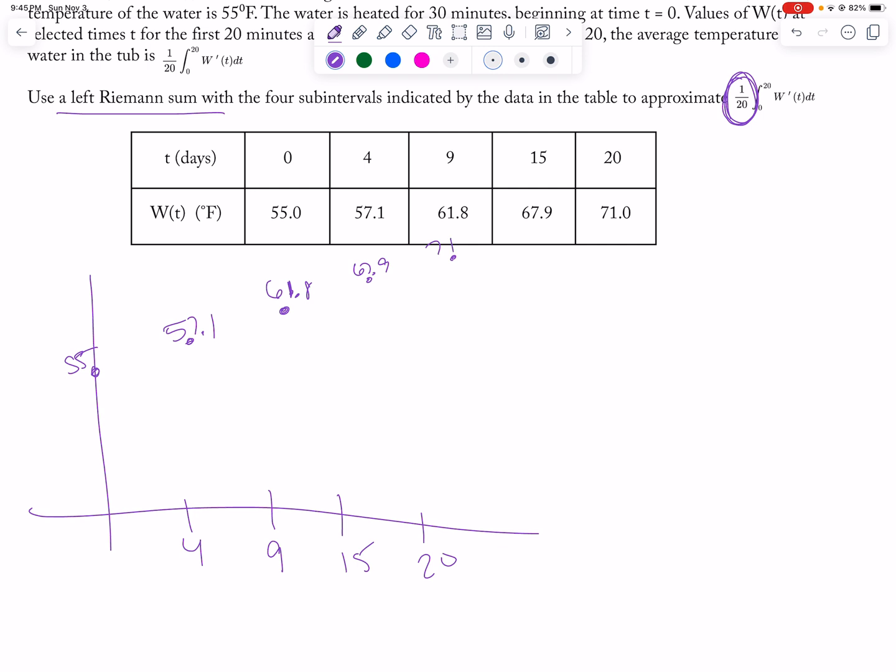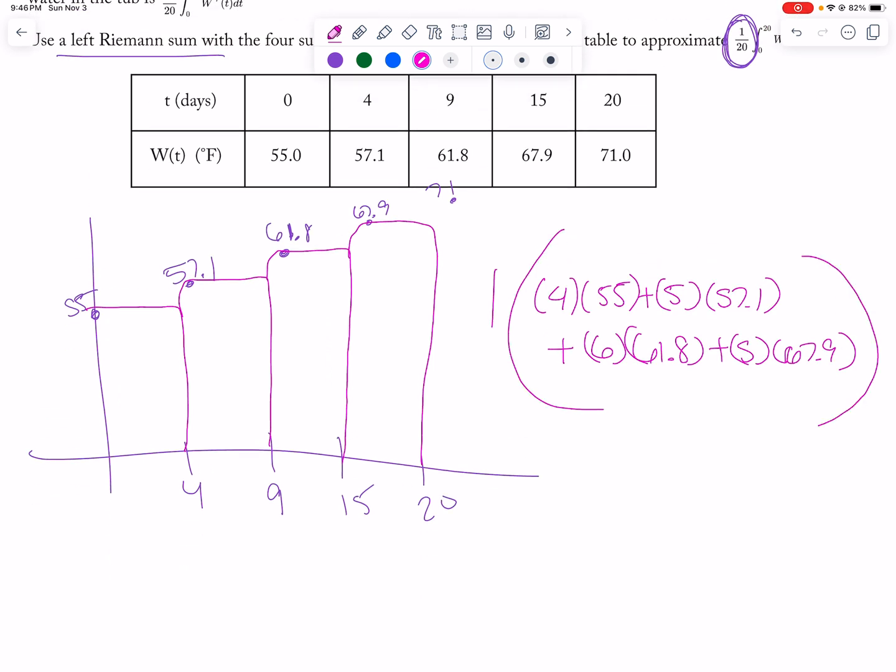So LRAM, so that's this way. So it'll be 4 times 55 plus 5 times 57.1 plus 15 minus 9 is 6 times 61.8, and then 5 times 67.9. And then you're going to have to multiply all that by 1 over 20.